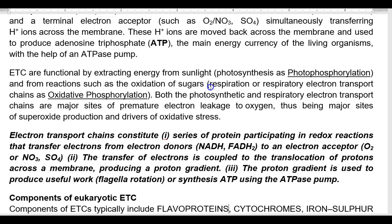The electron transport chain consists of a series of proteins participating in redox reactions — reduction and oxidation reactions — involved in transfer of electrons from electron donors such as NADH and FADH2. The transfer of electrons is coupled to the translocation of protons across the membrane, producing a proton gradient. This gradient can be used for flagellar rotation or to drive the ATP synthase for synthesis of ATP.